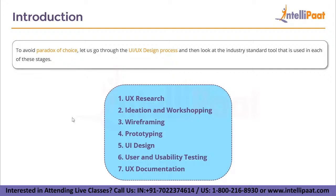The UI UX process generally includes all these stages. First, we start off with UX research, then we go with ideation and workshopping, followed by wireframing, prototyping, UI design, user and usability testing, and UX documentation. Now we'll be going through every stage and learning about what tools the industry is using for each of them respectively.